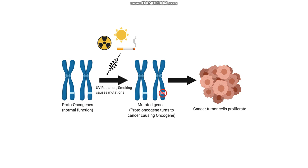Remember, with tumor suppressor genes — genes that suppress tumors — these exhibit germline mutations once mutated, and these cause inherited cancer. However, germline mutations are not common when we're talking about oncogenes. Oncogenes, on the other hand, are found in sporadic tumors.